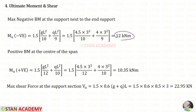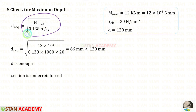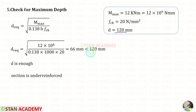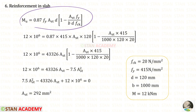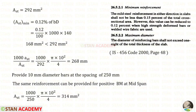Using the maximum moment of 12 kilonewton-meter, we apply the check for effective depth. Substituting all values into the formula with breadth b = 1000 mm, the required effective depth is 66 mm. Since we previously calculated the effective depth as 120 mm, which is greater than 66 mm, the section is adequate and under-reinforced. Using the design equation, the required area of steel Ast is 292 mm². Checking minimum Ast gives 168 mm², which is less than 292 mm², so we proceed with Ast = 292 mm².